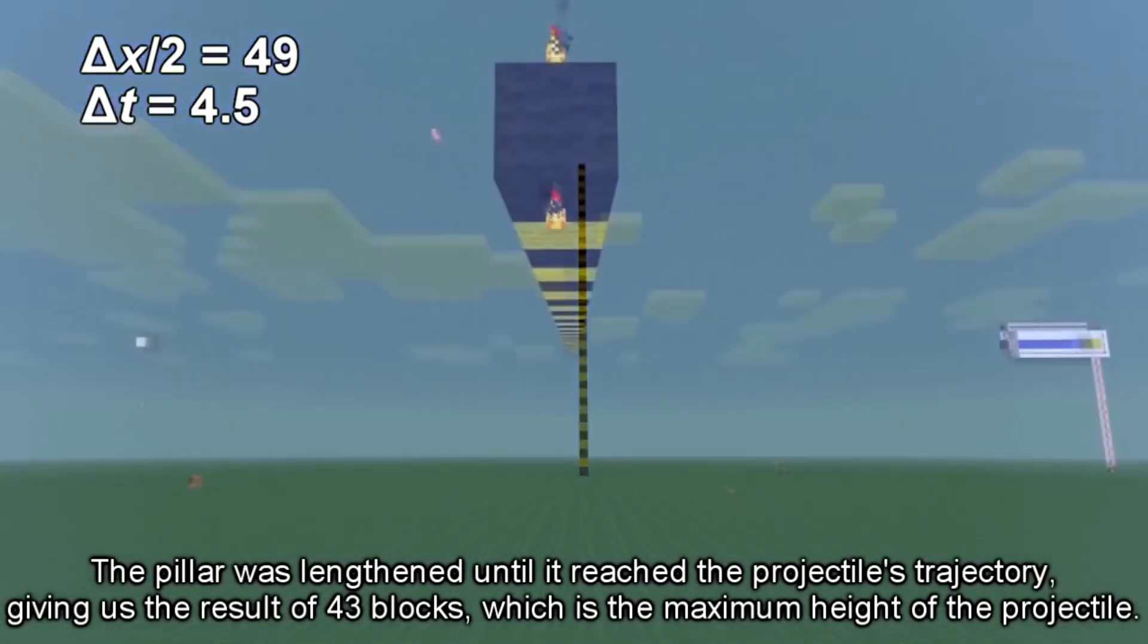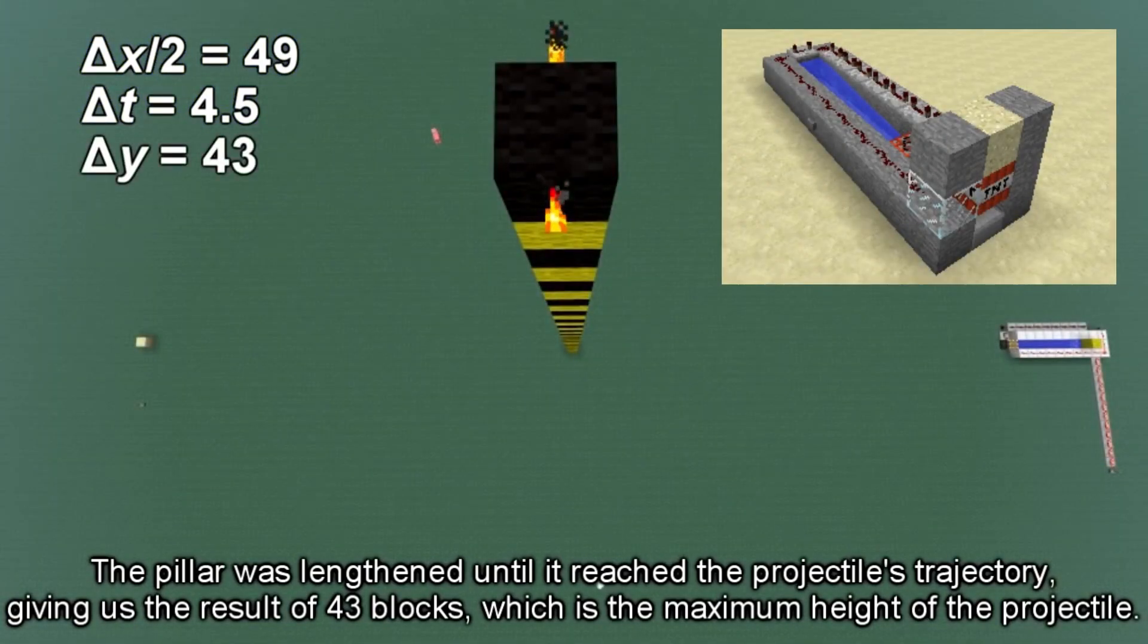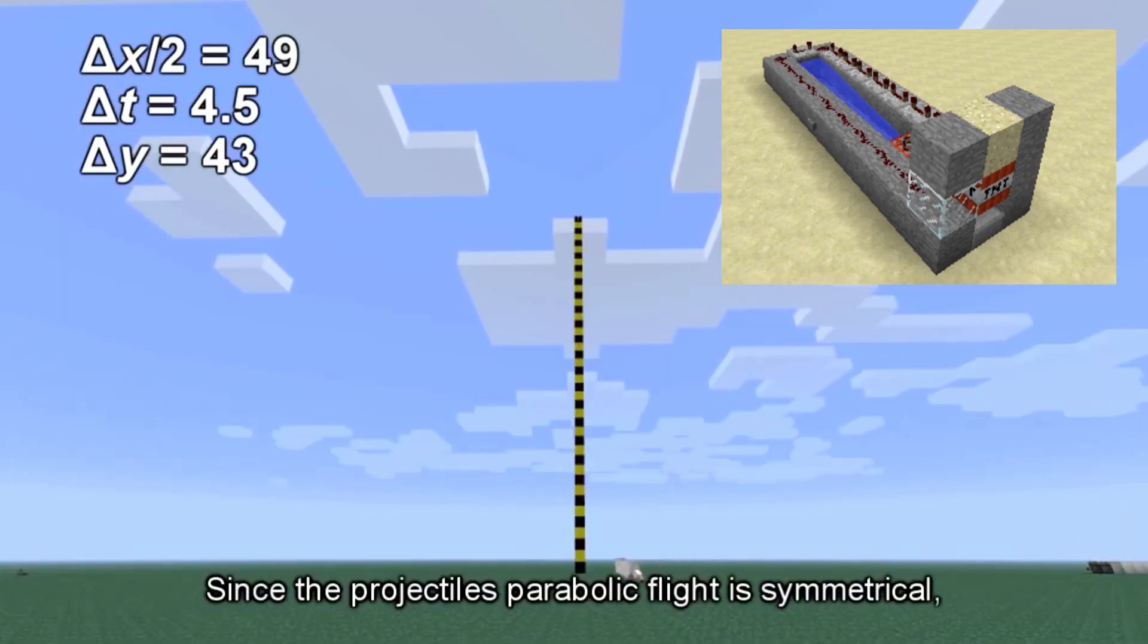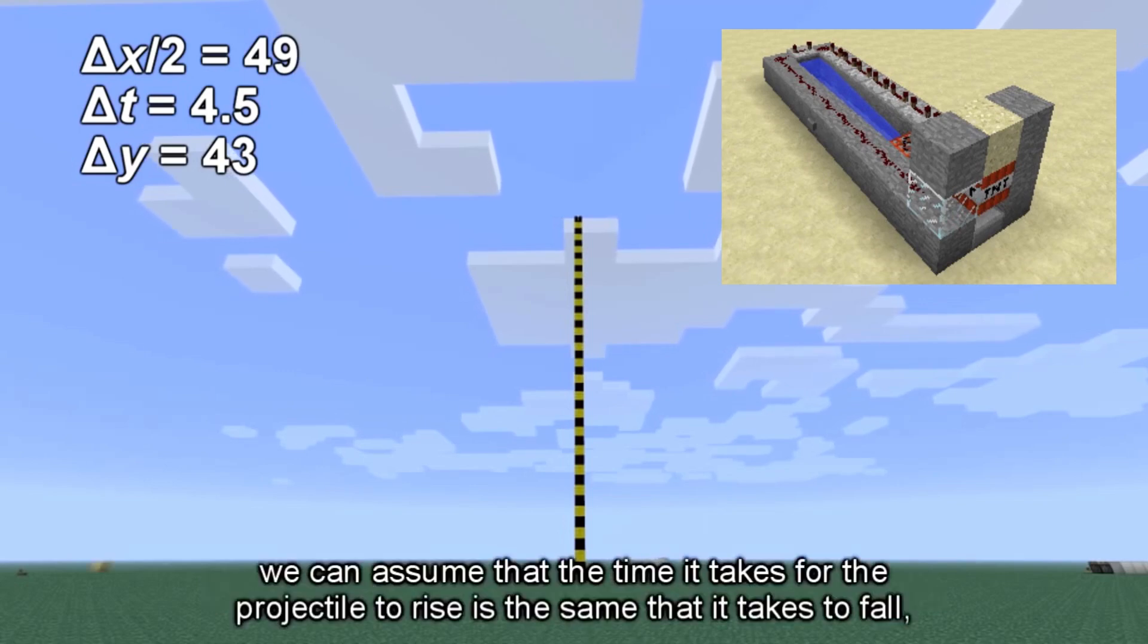If you haven't played Minecraft before, you probably wouldn't know what a sand cannon is and what in the world it has to do with physics. However, the observant among you may notice how we can apply a sand cannon's parabolic motion to find the gravitational constant of falling objects.